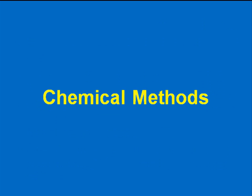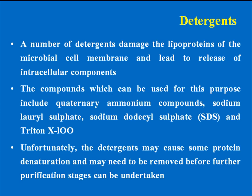Now let's discuss chemical methods in detail. The first chemical method is the use of detergents. A number of detergents damage the lipoproteins of the microbial cell membrane and lead to release of intracellular components. Compounds used for this purpose include quaternary ammonium compounds, sodium lauryl sulfate, sodium dodecyl sulfate, and Triton X-100. Unfortunately, detergents may cause some protein denaturation and may need to be removed before further purification stages.